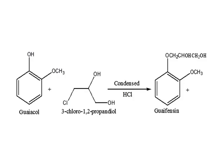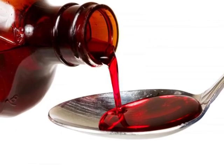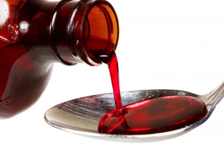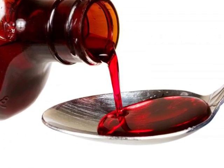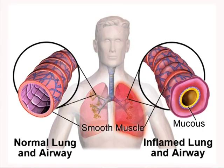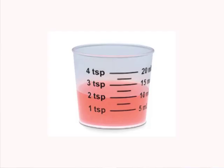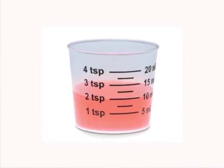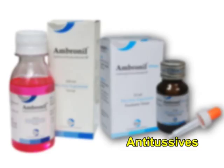Guaifenesin: for the synthesis of guaifenesin, guaiacol is used as a starting material. Action and uses: guaifenesin is an expectorant; it may be useful in the symptomatic relief of dry, non-productive cough and in the presence of mucus in the respiratory tract. Usual dose: 5 to 20 ml every 4 to 6 hours. Now we will focus on antitussives.